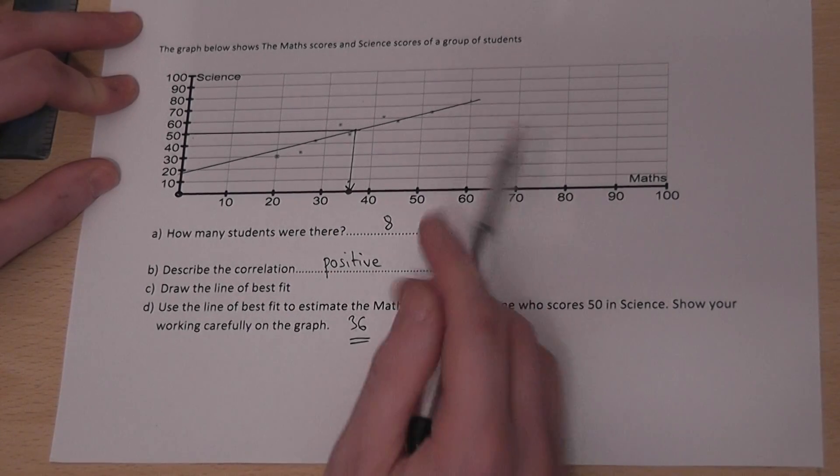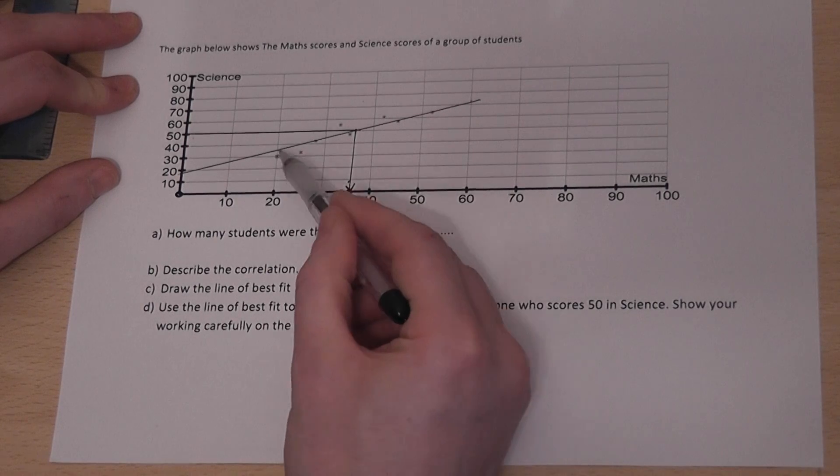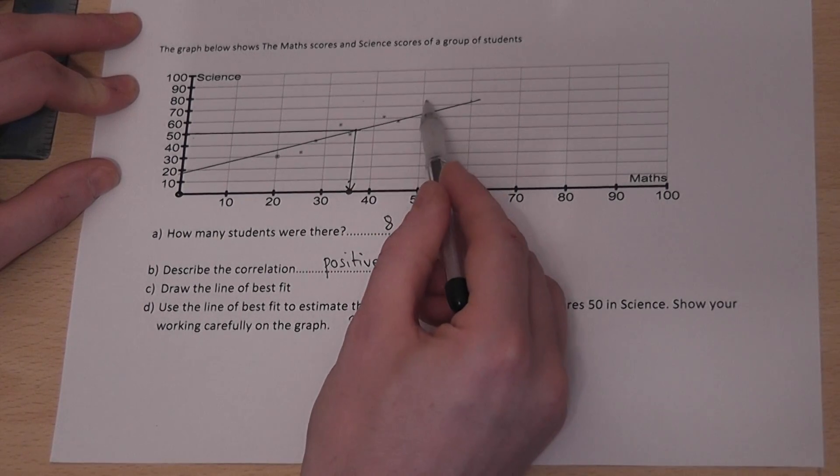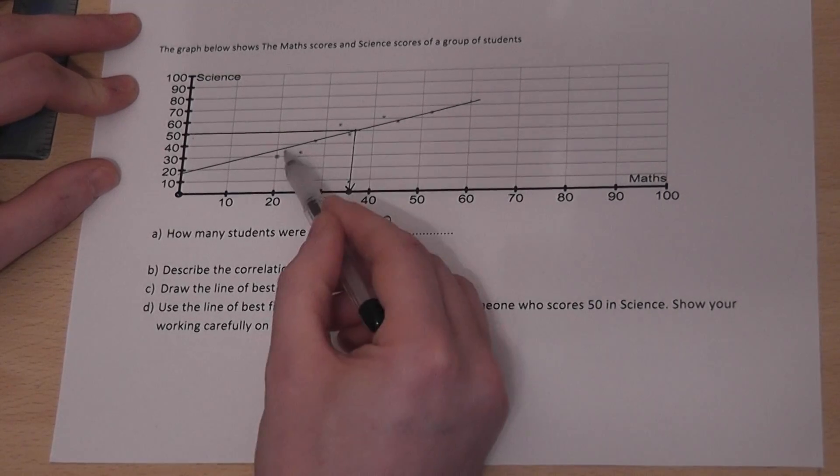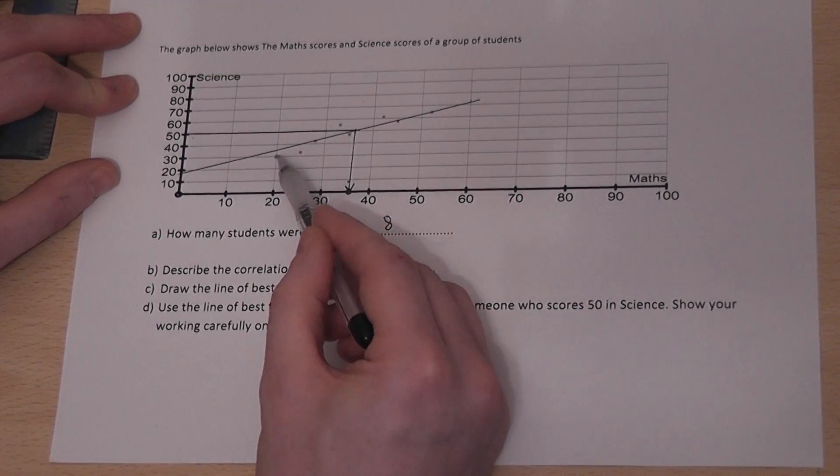Now, two other key points here. I have gone within the data set. The dots start here and end here. I have used the line which is within the dots. That's called interpolation.